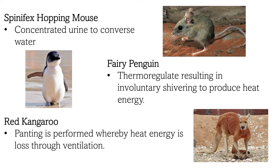Fairy penguins are able to thermoregulate their core body temperature as their muscle glands are activated, resulting in involuntary shivering to produce heat energy. Panting is performed by the red kangaroo, whereby heat energy is lost through ventilation. The process of panting allows water on the tongue and mouth surface to evaporate, as the blood underneath these surfaces transfers heat to the cooler water via conduction.